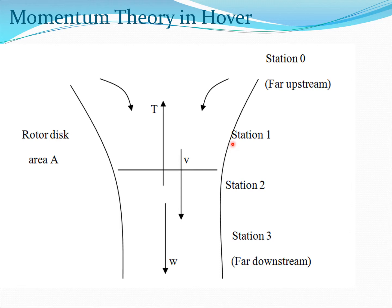Then you have the stations: zero far upstream, three far downstream, one on top of the rotor disk, and two below the rotor disk. We are going to use this nomenclature to get the pressures. This is going to be p0, this is going to be p1, this is going to be p2, and this is going to be p3, which is p0 again.